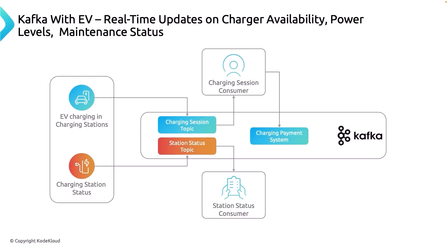Once someone finishes charging, that information is immediately sent to another topic — the charging payment system topic — which records how many minutes or hours the vehicle used the charging machine, and then bills that user accordingly.